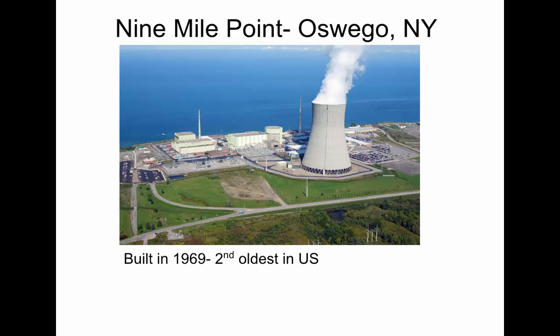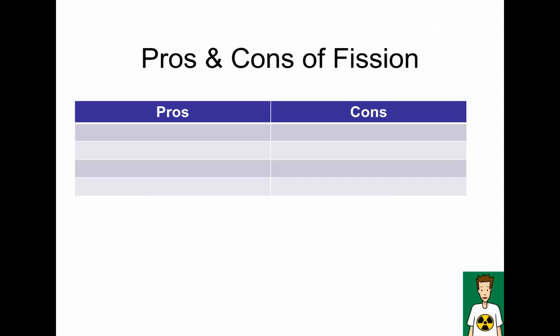There are nuclear power plants in New York State, relatively close to us. Nine Mile Point in Oswego, it's really old, it's the second oldest nuclear power plant in the country. They're usually built along lakes because they need large quantities of fresh water to cool down the water after it turns into steam. When you see these big things, these are cooling towers. This is not smoke, that's just steam. Some people think there's tons of pollution coming out, there's actually not.